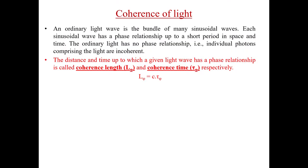Before talking about coherence of laser, let us first understand what coherence is. An ordinary light ray is a bundle of many sinusoidal waves. Each sinusoidal wave has a phase relationship up to a very short period in space and time, and ordinary light has no sustained phase relationship. Coherence can be defined as the extent of phase relationship. If by knowing the phase of one wave, the phase of another wave can be predicted, then we say these two waves are phase coherent. In other words, two waves are coherent if their phase difference is constant over time and space.